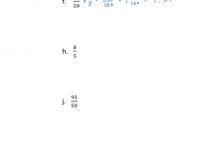Now we have 8 fifths, and we've seen the denominator of 5 before. We can multiply 5 times 2 to get 10, so we make 2 halves. 8 times 2 is 16, and 5 times 2 is 10. We could change that to a mixed number — 1 and 6 tenths — and as a decimal, 1.6.